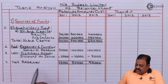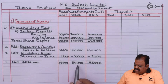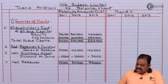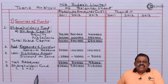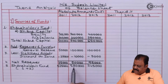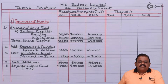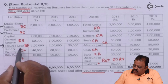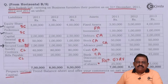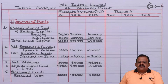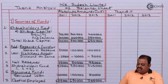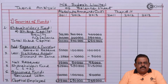After deducting the fictitious asset, net reserves are 25 thousand, 90 thousand, and 95 thousand. Adding net reserves to total share capital gives shareholders fund: 5 lakh 25 thousand, 5 lakh 90 thousand, and 7 lakh 45 thousand. Adding borrowed funds (secured loan) to shareholders fund gives total capital employed: 6 lakh 25 thousand, 6 lakh 90 thousand, and 7 lakh 95 thousand. We have completed the first part of the balance sheet.